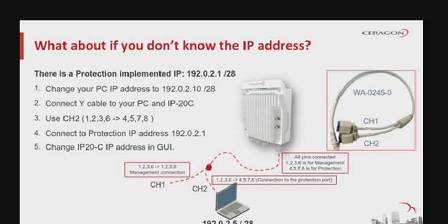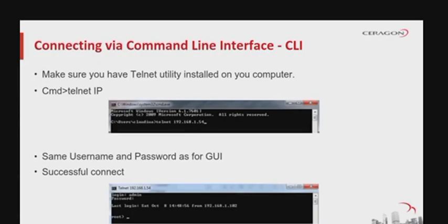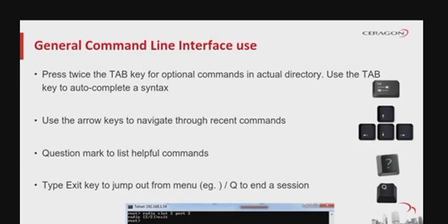You can produce the protection cable from normal Ethernet cable using a crimping of pins 1, 2, 3, and 6 connected to pins 4, 5, 7, and 8. To connect to the element via command line interface, you can use the Telnet utility installed in Windows or another terminal utility like PuTTY. With Telnet installed, open the command prompt in Windows, type 'telnet' and the IP of the element. The same username and password apply as in web login. Now let's look at some general help commands in the command line interface.